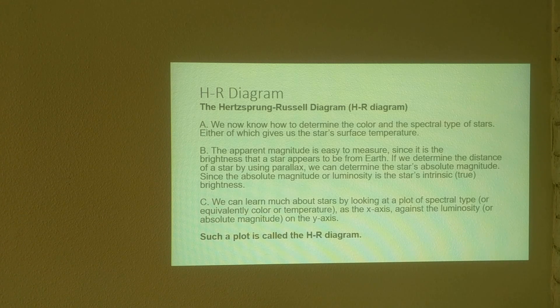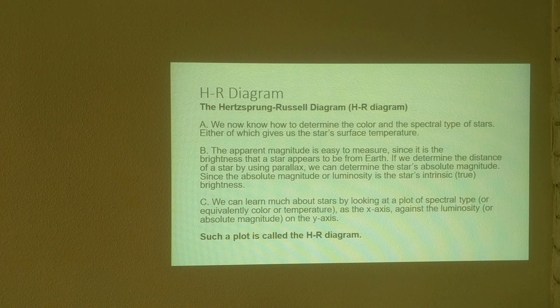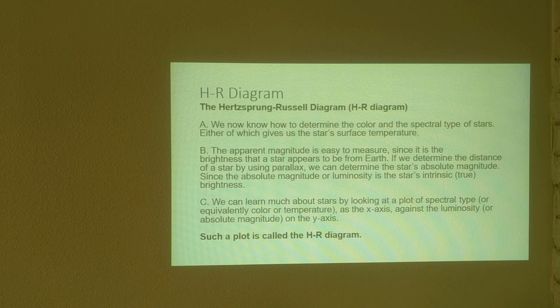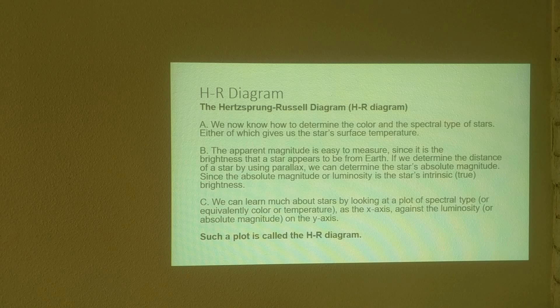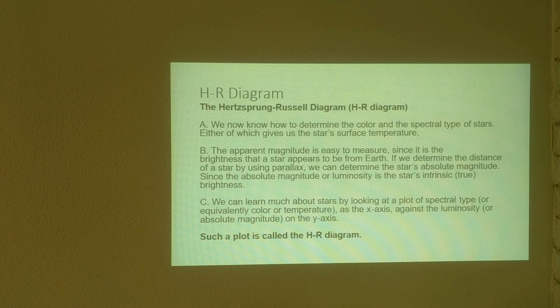The absolute magnitude is the true brightness, the true magnitude of a star, and it's equivalent to the luminosity, which is the total amount of energy emitted by that star. So the absolute magnitude is the star's intrinsic or true magnitude.